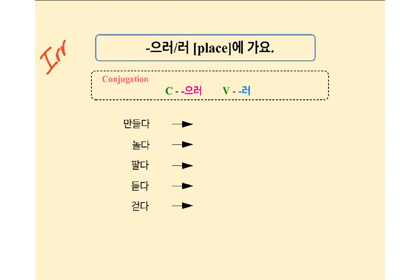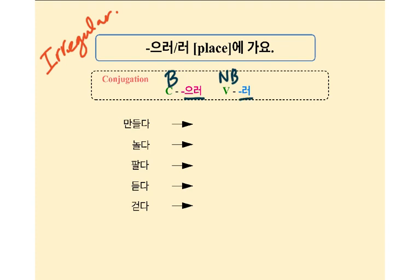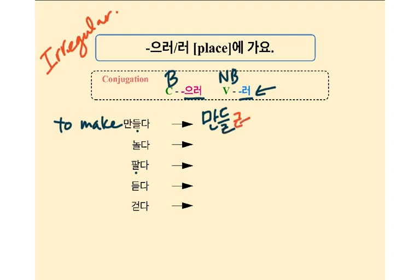여러분, now let's study ㄹ irregulars too. As we practiced, if you have 받침 before 다, you add 으러. If there is no 받침, add 러. But if you have ㄹ 받침, then we add 러, not 으러. 만들다 means 'to make' — 만들러, not 만들으러.